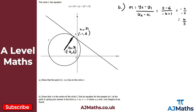The gradient of the radius is four over three, which is a positive gradient — that seems sensible. Since the radius and tangent meet at a right angle, the perpendicular gradient is the negative reciprocal: flip and multiply by minus one, giving minus three over four.